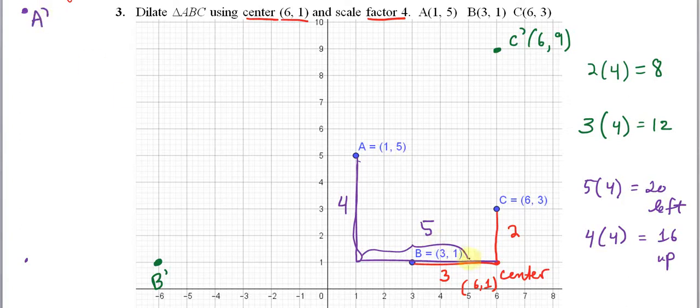So it's going to be way up here. This is going to be A prime. So I start at (6,1), and my x-coordinate here is 6 and I go 20 left, so that's going to give me -14. And my y-coordinate is 1 and I go up 16, so that's going to give me 17.